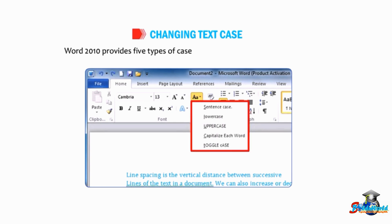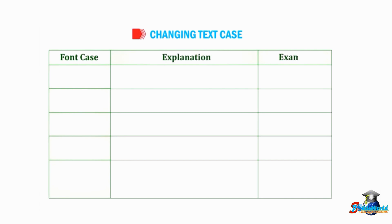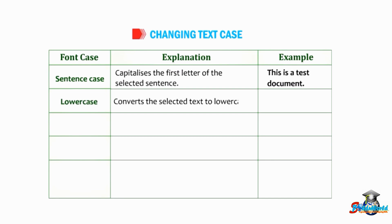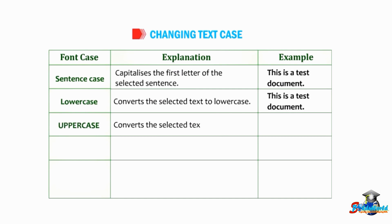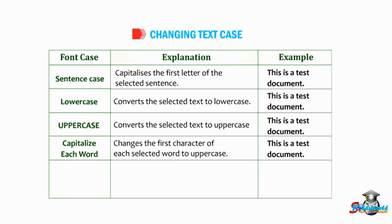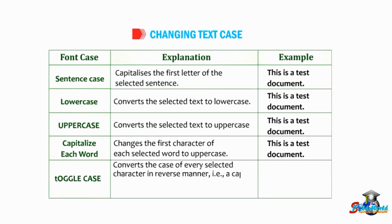Word 2010 provides five types of case conversions. Sentence case capitalizes the first letter of the selected sentence — example: 'This is a test document.' Lowercase converts the selected text to lowercase. Uppercase converts the selected text to uppercase. Capitalize Each Word changes the first character of each selected word to uppercase. Toggle Case converts the case of every selected character in reverse — a capital character converts to lowercase and vice versa.